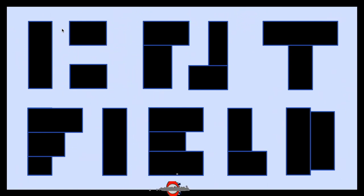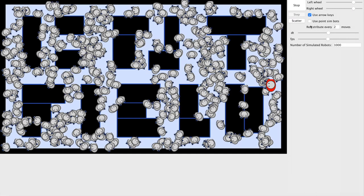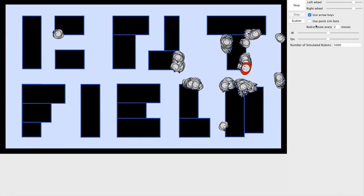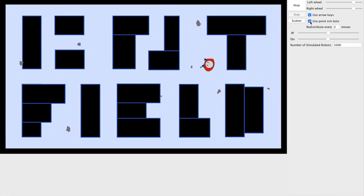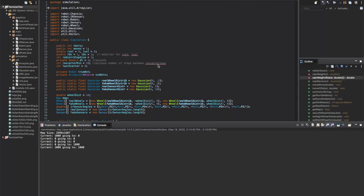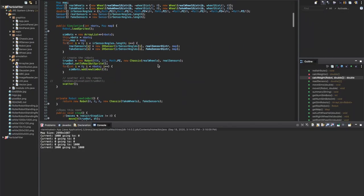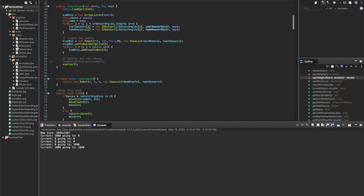If you're interested in exploring particle filters more we have the app available for download on GitHub and it's linked below in the description. You can move the robot, control all the simulated robots look and how they move, and a bunch of other things. If you enjoy coding you can take a look at and modify the code on GitHub to explore the particle filter even more.